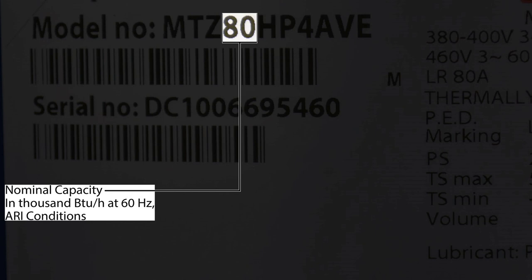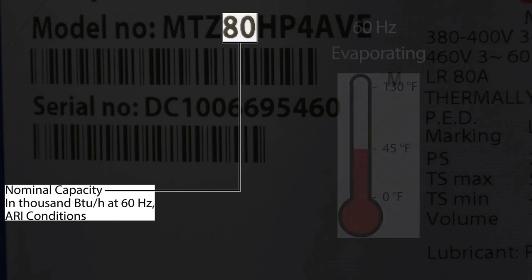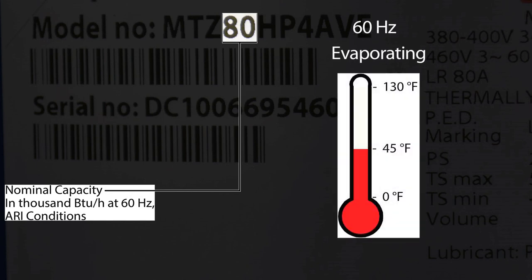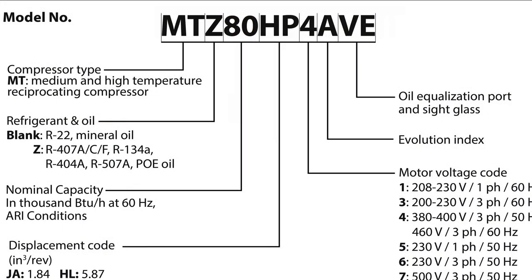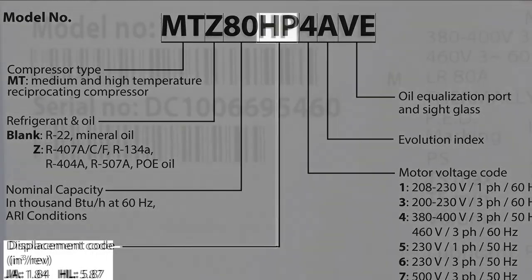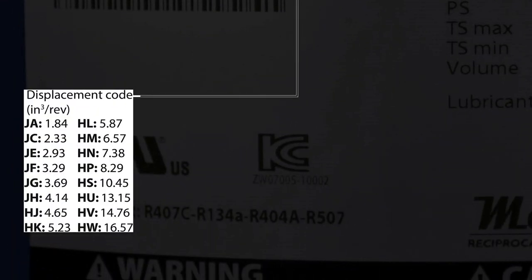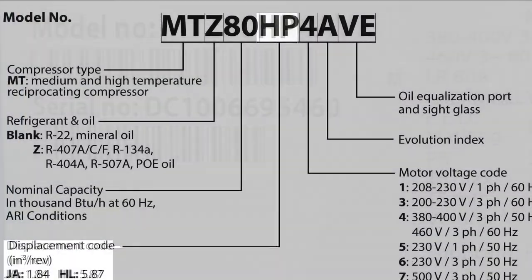The nominal capacity is determined using standard AHRI conditions at 60 Hz, with 45 degrees Fahrenheit for the evaporating temperature and 130 degrees Fahrenheit for the condensing temperature. The next two digits signify the displacement code, with units in cubic inches per revolution.